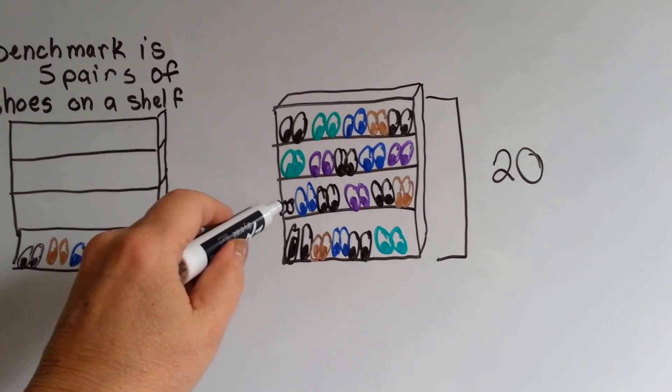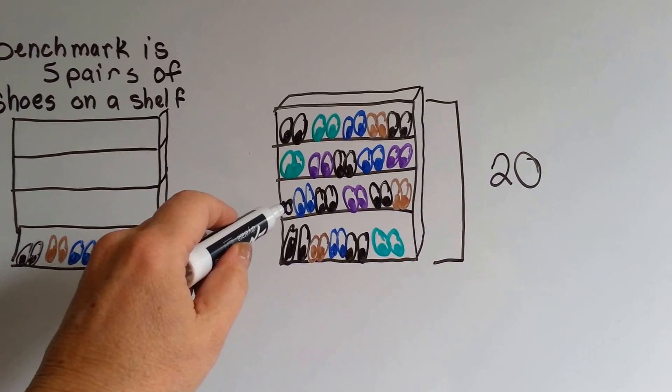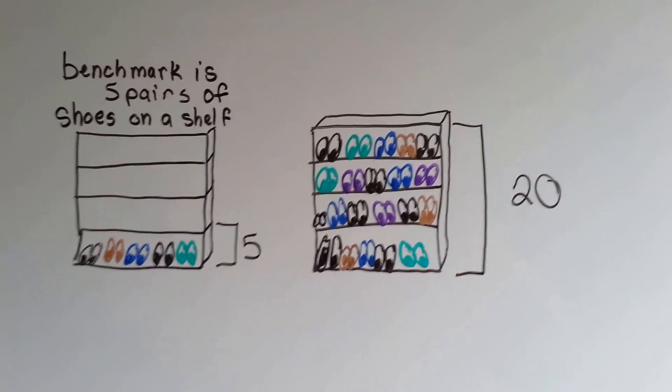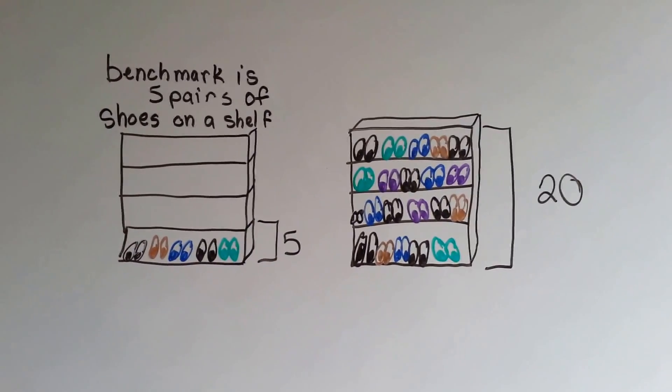Now there could be a pair of baby shoes stuck in here as a sixth pair, so it may not be the exact amount again. It's an estimate, but it's probably really close to the real amount.